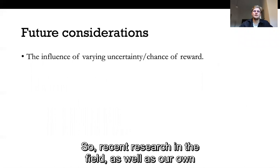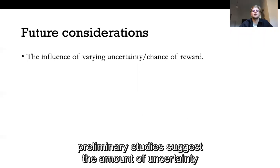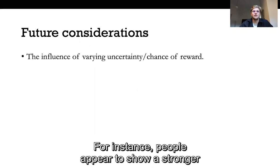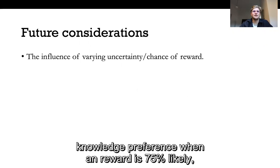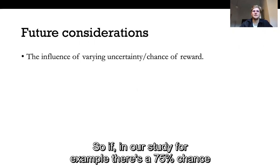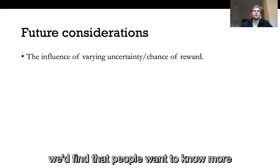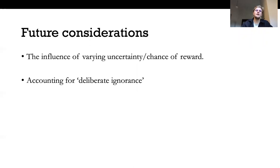So some future considerations. Recent research in the field as well as our own preliminary studies suggests the amount of uncertainty or probability of an event plays an important role in people's information search. For instance people appear to show a stronger knowledge preference when a reward is 75% likely as opposed to 25%. So if in our study for example it's a 75% chance of an M&M compared to a 25% chance of M&M we find that people want to know more when it's a 75% chance as opposed to 25% chance.